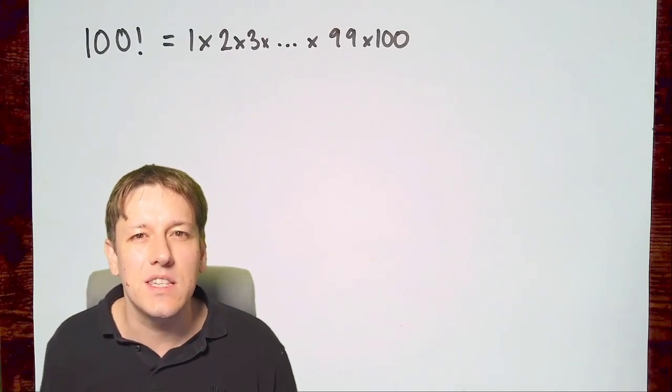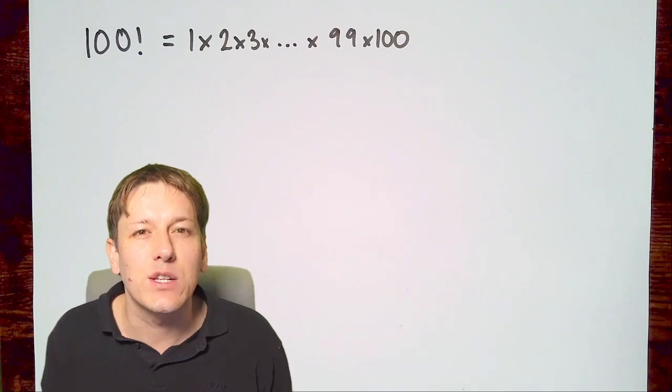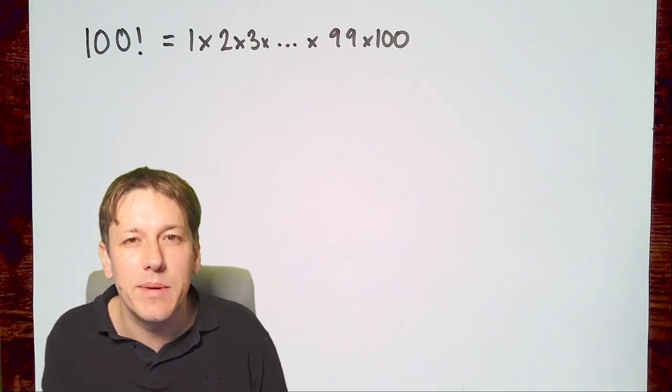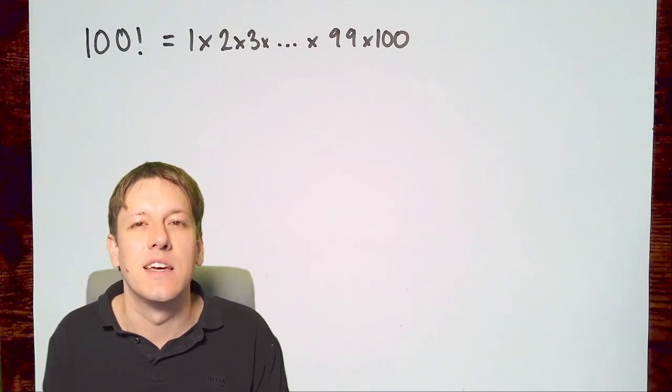In this video we're going to think about how many zeros there are on the end of 100 factorial. Factorial means you start with 1, then multiply by 2, by 3, by 4, until you get to the number we're factorial-ing, in this case 100.